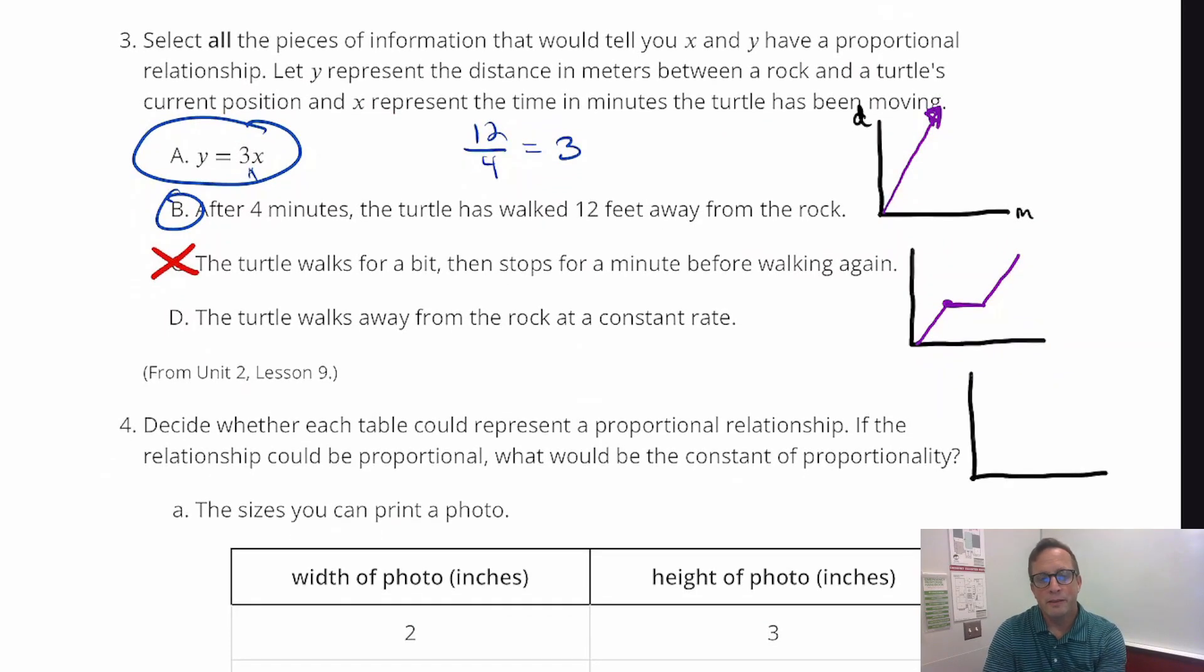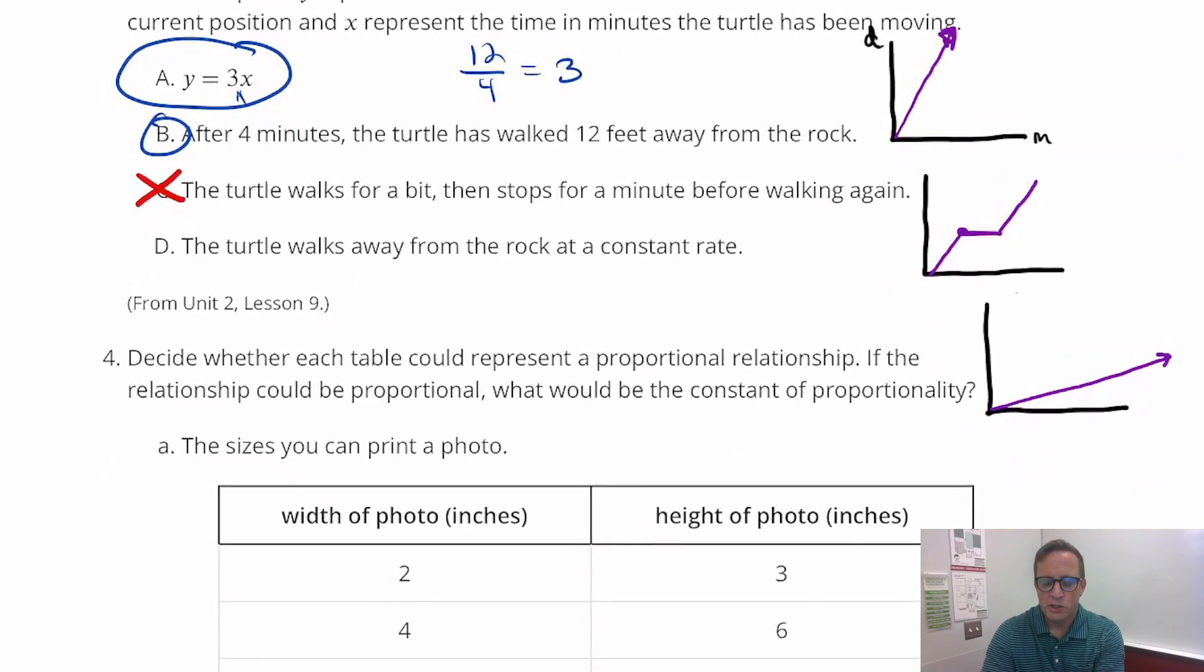And D basically gives us the definition of proportional relationship. Turtle walks away from the rock at a constant rate. So it walks away at a constant rate. It doesn't matter how fast or how slow the turtle's walking. It's a really speedy turtle, but I'm betting that if it's a turtle, it's not going too fast. In the water they're not bad, but land, not so much.